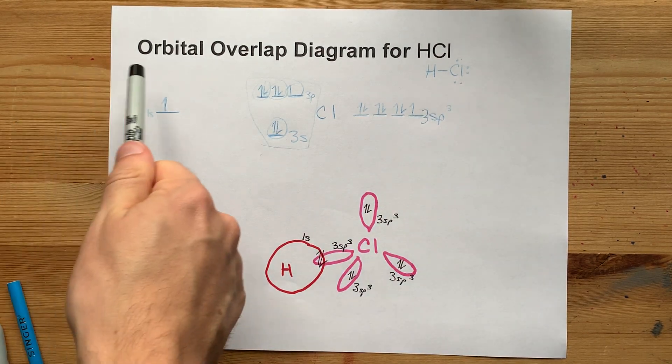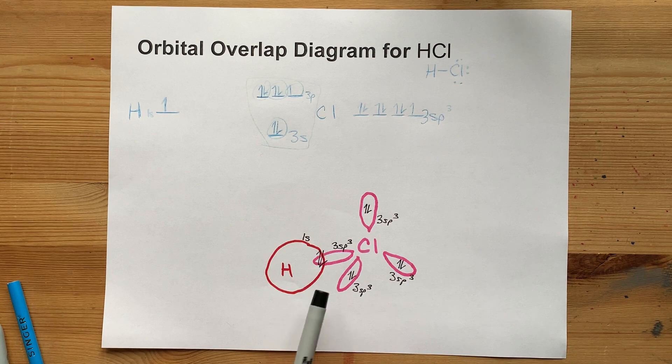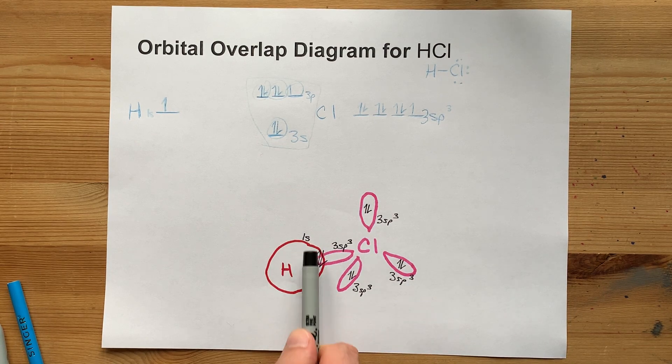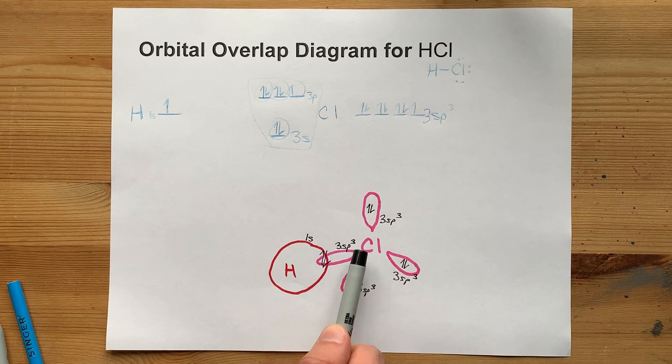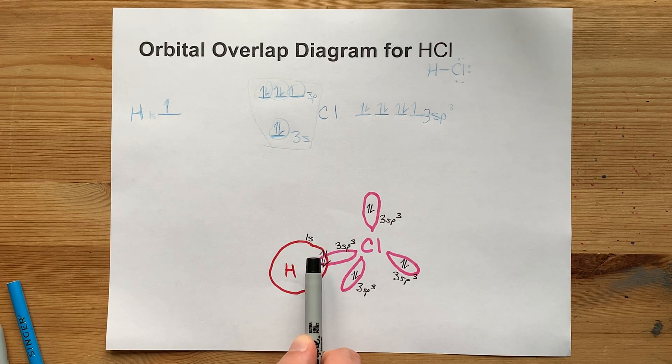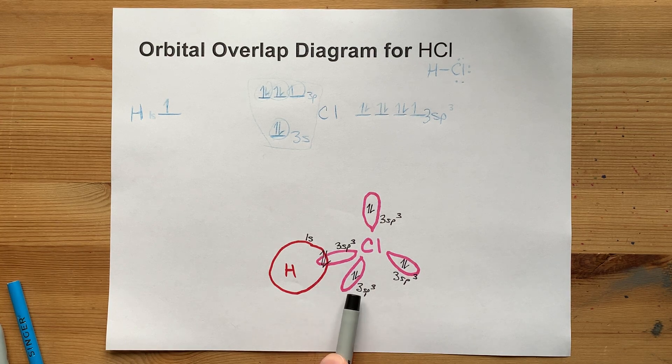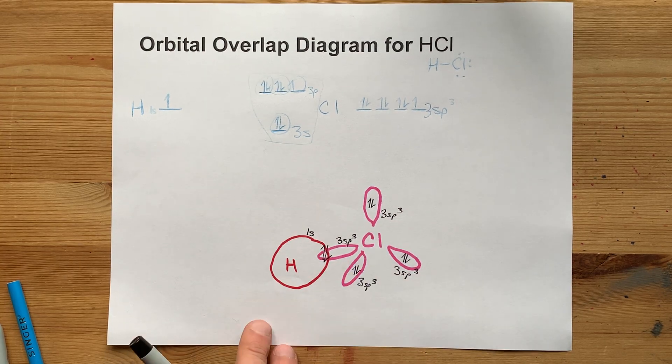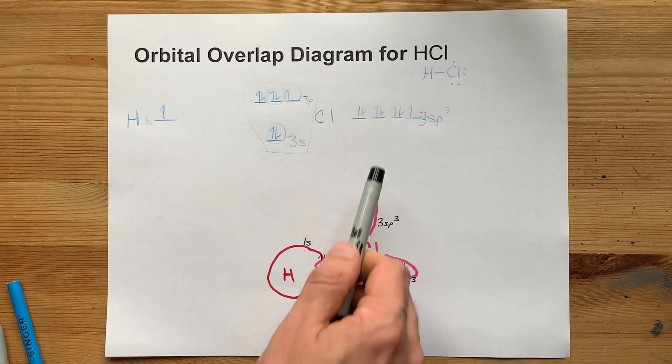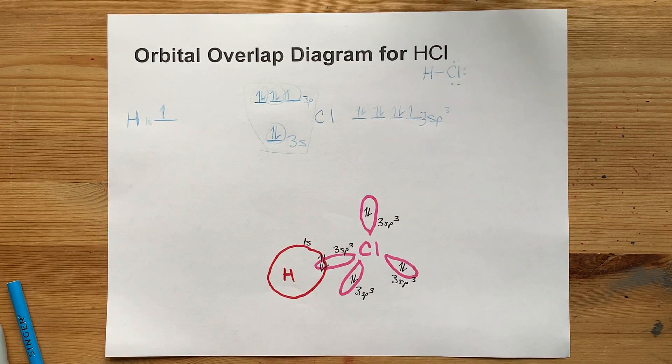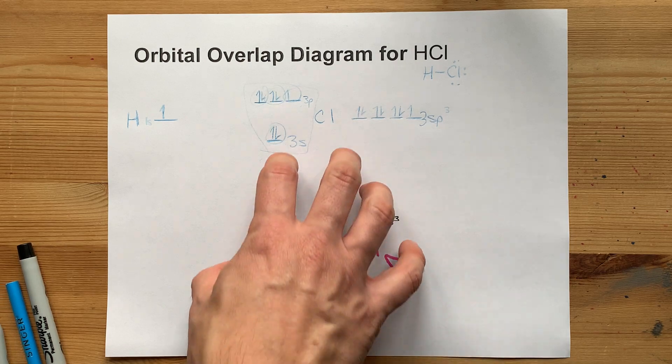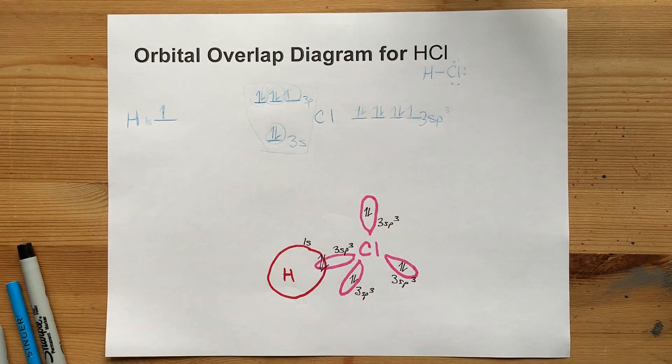The orbital overlap diagram for HCl has an overlap, an actual overlap, between H's 1s and one of the 3sp3 hybridized orbitals from chlorine. The other three 3sp3 hybridized orbitals just have lone pairs in them. See? 1, 2, 3 lone pairs. 1, 2, 3 lone pairs here. It's a beautiful thing, just like you are. Best of luck.